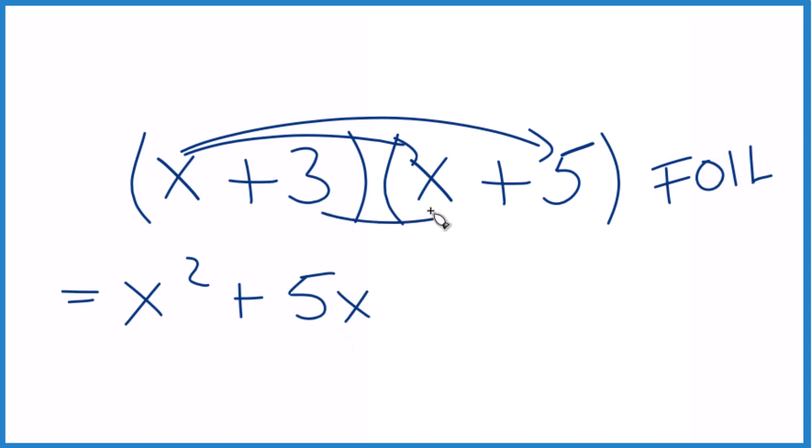The inside, 3 times x, that's 3x. And then the last, 3 times 5, that's 15.